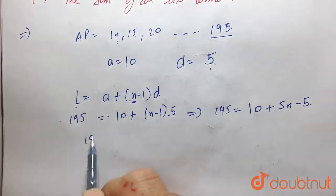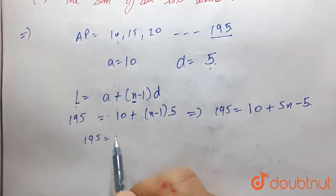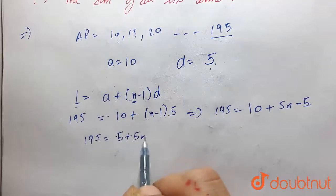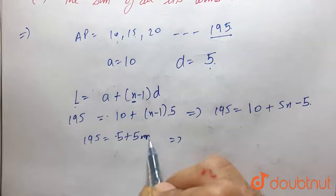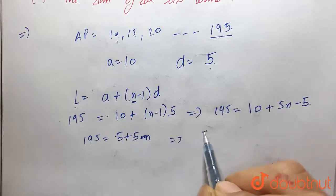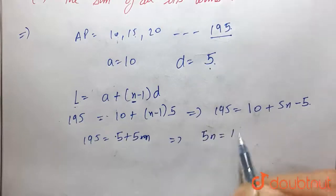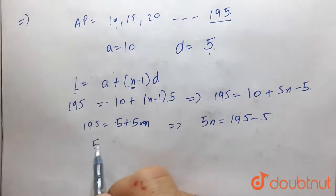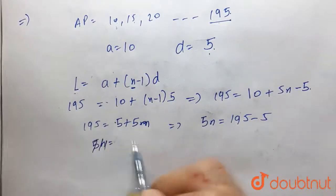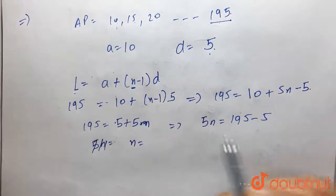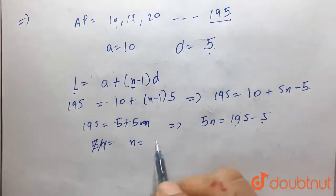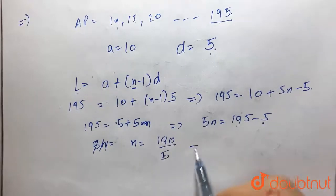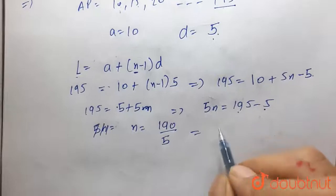From here, 195 equals 5 plus 5n. So 190 equals 5n, which gives n equals 190 upon 5, which is equal to 38.